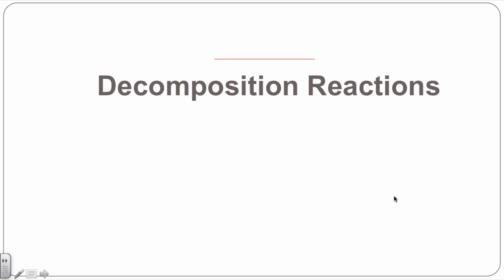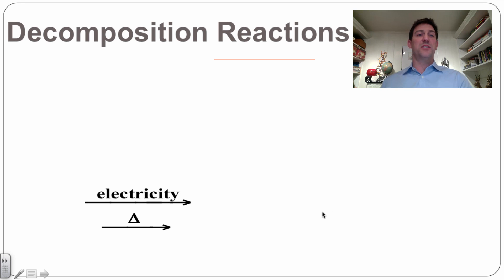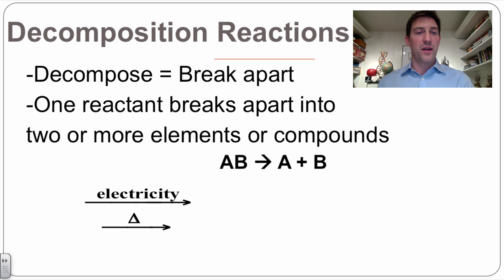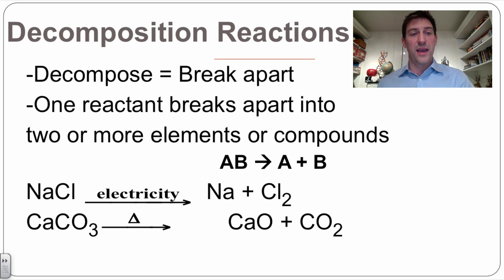The next one are decomposition. This is the opposite of a synthesis reaction because it's decomposing or breaking apart. So we've got that AB, like the one that we put together before, breaking up into its two parts. If we run electricity through sodium chloride, which is table salt, it'll break up into the components that it's made of, which is sodium and chlorine gas.